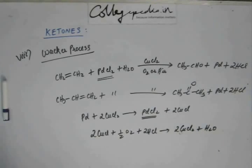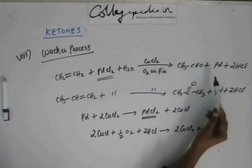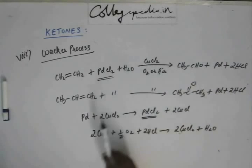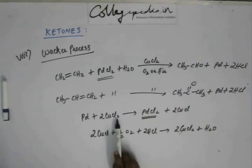So basically what will happen is that initially whatever palladium chloride we have added that will be used in the reaction, palladium will be produced, that palladium will again form palladium chloride but the cupric chloride will be reduced to cuprous chloride. And that cuprous chloride will again be oxidized by oxygen to cupric chloride.